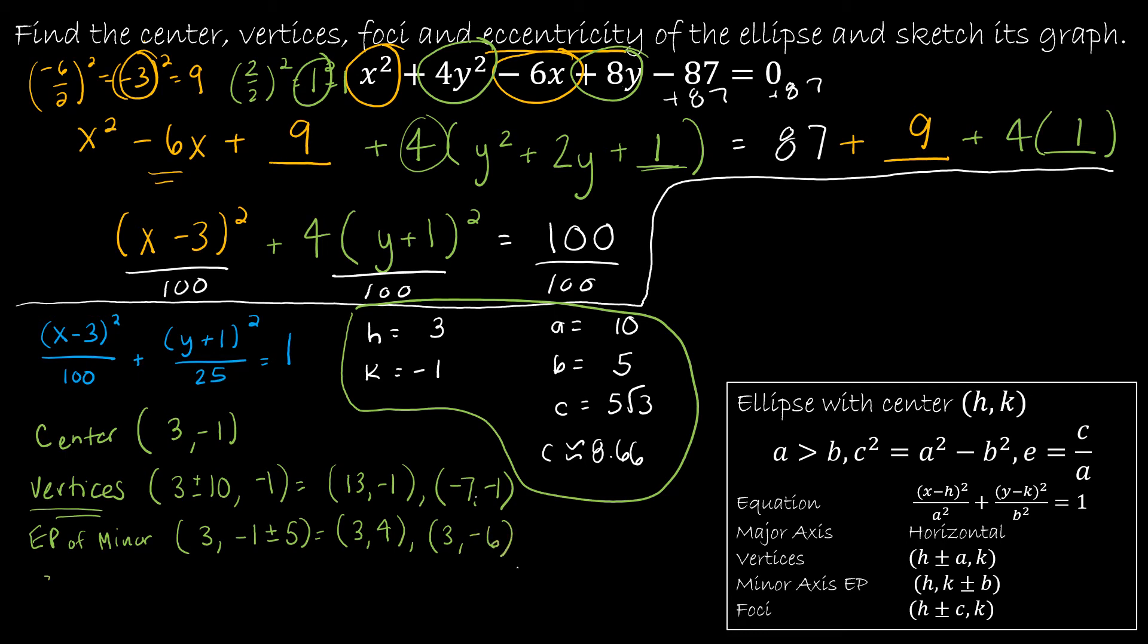And then the last thing is the foci, and the foci would be h, 3 plus or minus, and this is where I would use that 8.66 instead, comma k, which is negative 1. Only because they're asking me to sketch the graph, and if I want to sketch the graph, I need to know whereabouts 5 radical 3 is. So this would be 11.66 comma negative 1, and then 3 minus that would be negative 5.66 comma negative 1.